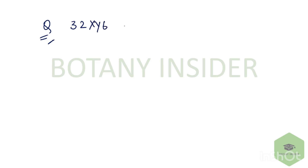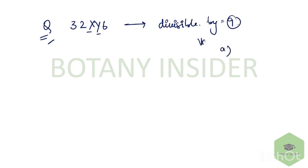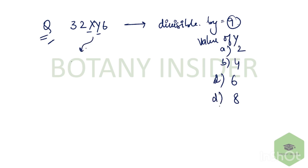The first question had a number given to you, and they asked by what values x and y should be such that the entire number gets divisible by 9, and they asked you what is the value of y. The four options given were 2, 4, 6, and 8. The key concept here is: when is a number divisible by 9? When the complete sum of its digits is also divisible by 9.